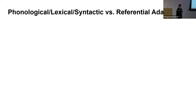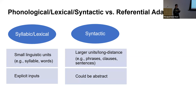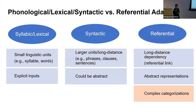There are key differences across levels of language adaptation. Syllabic and lexical inputs are small and explicit units, while syntactic adaptation involves larger units with long-distance dependencies and requires abstract representations of syntactic structures. Similarly, referential adaptation involves long-distance dependencies between pronouns and their antecedents and requires abstract representations. What makes referential adaptation particularly distinct is the complexity of structure categorization.